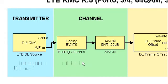Next, the modulated waveform is transmitted over a fading channel. Within the LTE block set, all the channel models described in the LTE standard are available. In this case, we are using an Extended Vehicular A model with a maximum Doppler frequency of 70Hz and medium antenna correlation at the receiver.